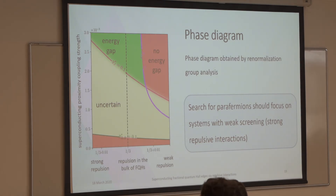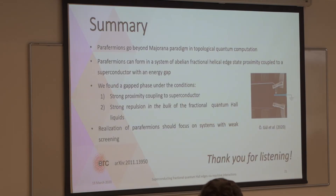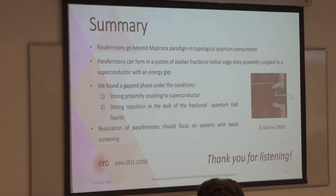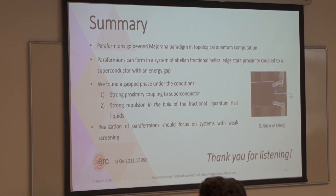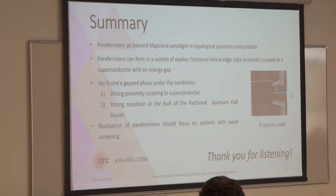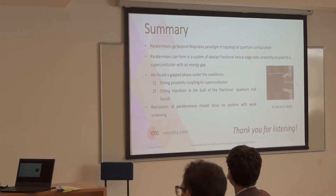This led us to our main conclusion: if you want to build parafermions in this system, you need strong repulsive interactions or weak screening. To summarize: parafermions are a generalization of Majorana fermions and allow a more powerful implementation of a topological quantum computer. They can be realized in a system of fractional quantum Hall edge states proximity-coupled to a superconductor. We found that strong proximity coupling combined with strong repulsion in the bulk of the fractional quantum Hall edge states can sustain a suitable phase to support them.